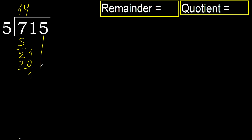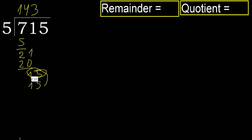Subtract. Next, 15. 5 multiplied by 3 is 15, 15 is not greater. OK. Subtract.